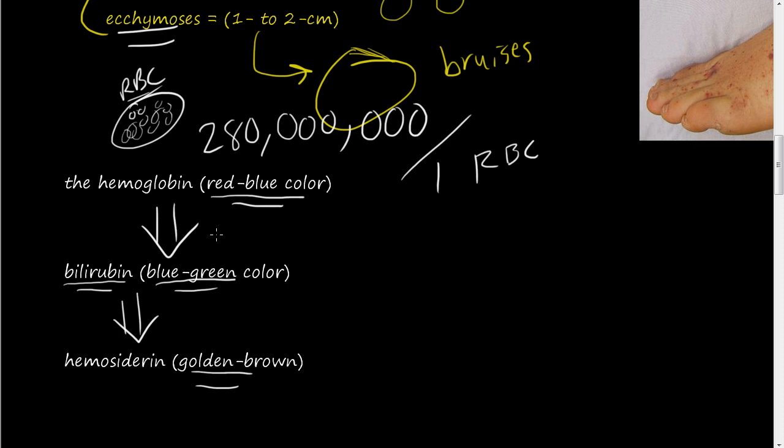And these are kind of the stages of healing, if you will, of that bruise. And this is why you see those colors when you get a bruise. So in the case of peptic ulcers and menstrual bleedings, you're losing a lot of these red blood cells and you're losing a lot of hemoglobin. And inside this hemoglobin, you have iron.